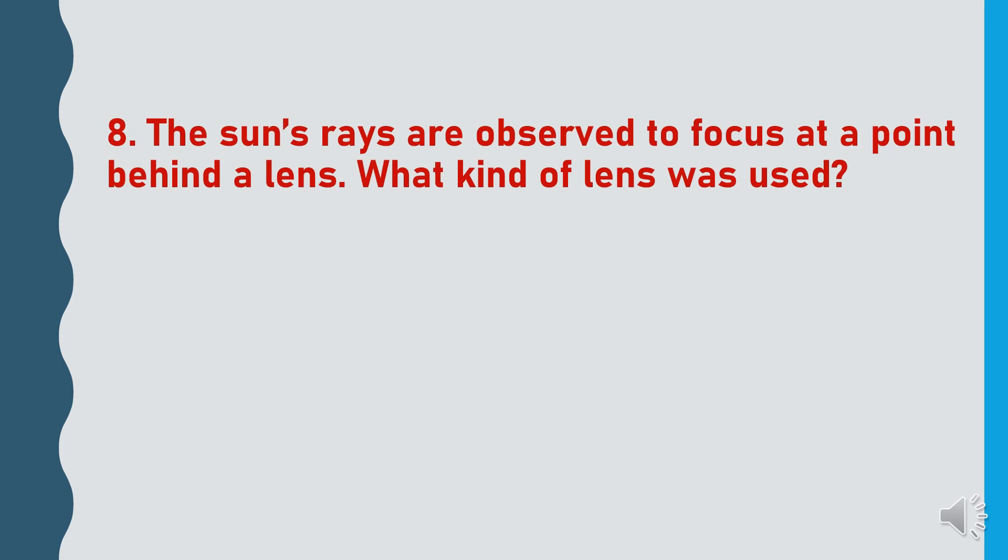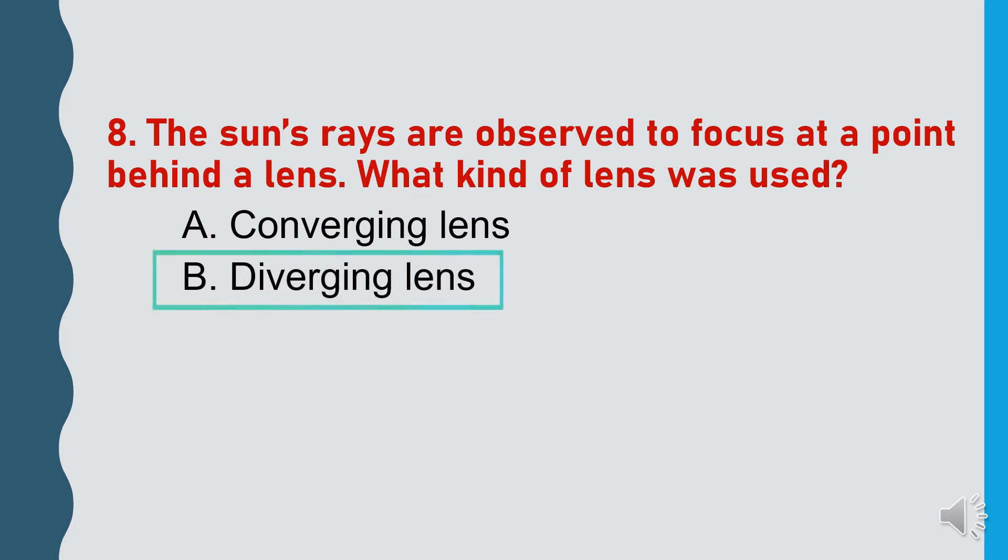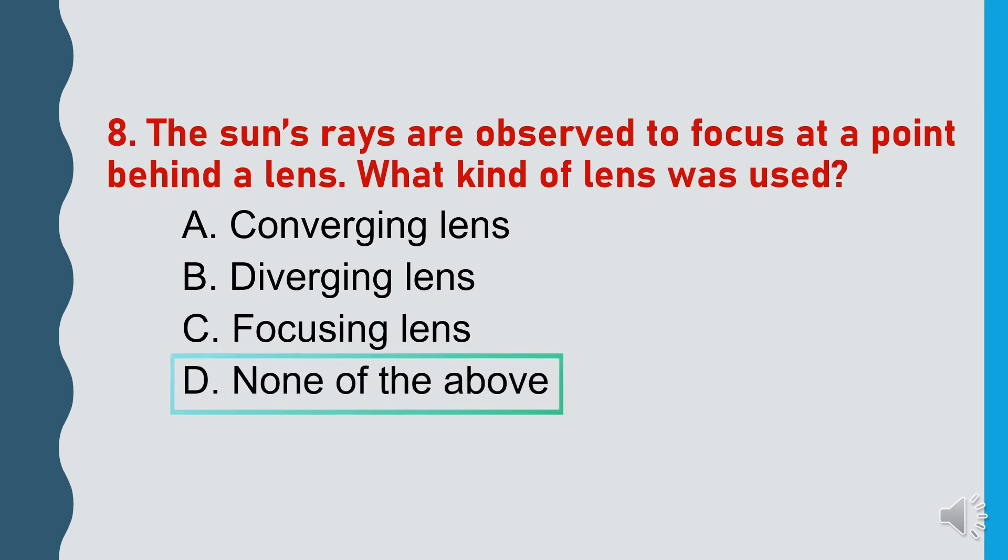The sun's rays are observed to focus at a point behind a lens. What kind of lens was used? Converging lens, Diverging lens, Focusing lens, or None of the above.